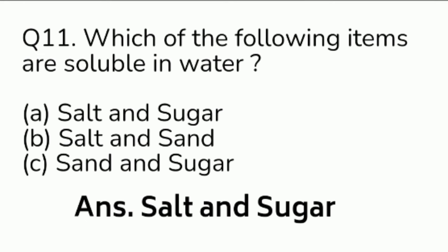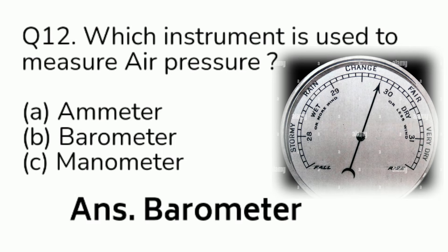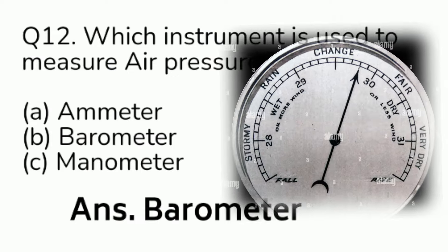Question number 12. Which instrument is used to measure air pressure? Option A: ammeter. Option B: barometer. Option C: manometer. Answer is Option B, barometer.